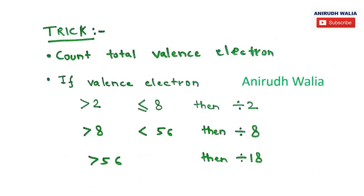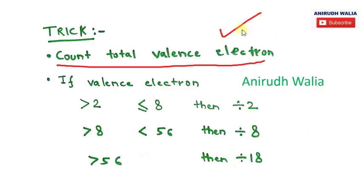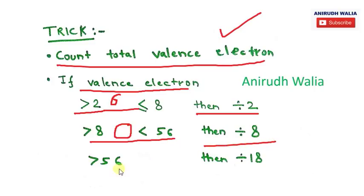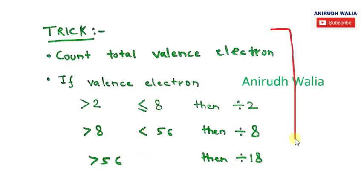Here is the important trick: there are two steps to calculate the hybridization of any compound. First, calculate the total valence electrons. Then, if the total valence electrons lie between 2 to 8, divide by 2. If it lies between 8 to 56, divide by 8. If the total valence electrons are greater than 56, divide by 18. Remember this two-step concept — you can solve all problems.